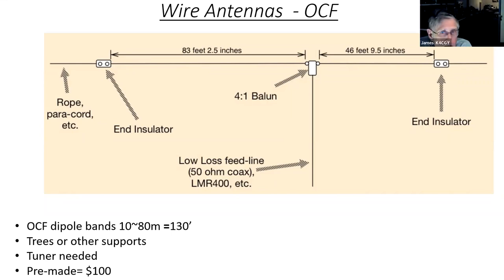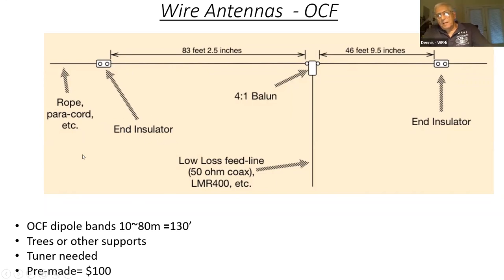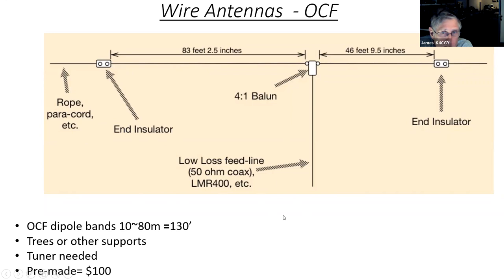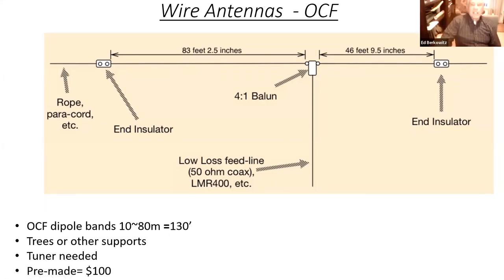For some newer hams, the WARC bands are 30 meters, 17 meters, and 12 meters. The WARC bands come from the World Administrative Radio Conference of 1979, when they gave us those bands — that's why they're known as the WARC bands.